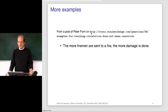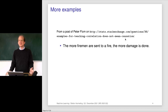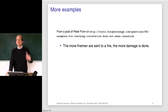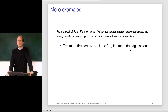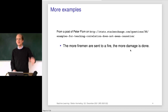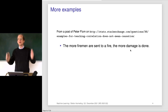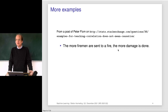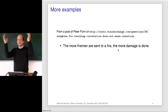I found a nice entry at Stack Exchange: examples for teaching 'correlation doesn't mean causation.' There are nice examples from Peter Flum. The more firemen are sent to a fire, the more damage is done — so should we send only one fireman to reduce damage? Of course this is garbage. Nonetheless, the statement is statistically true: there is a strong correlation between the number of firemen and the amount of damage, because the fire is large so you send many firemen.